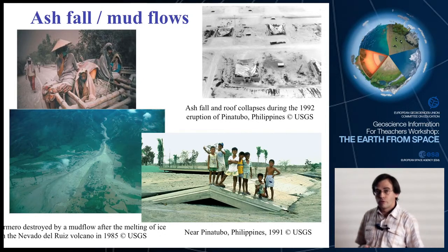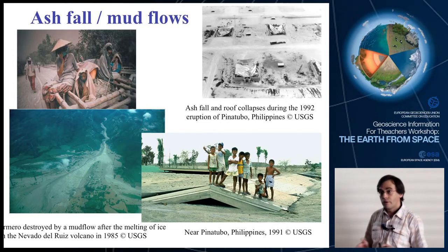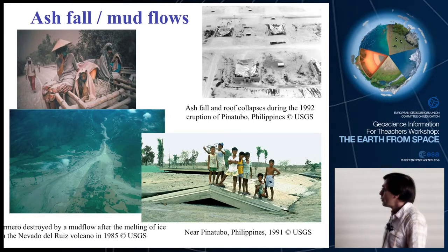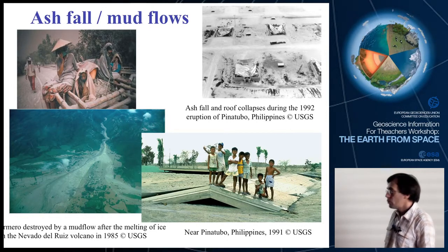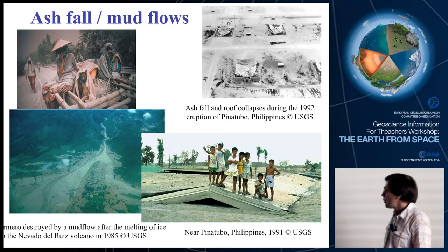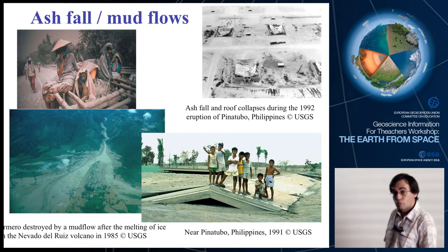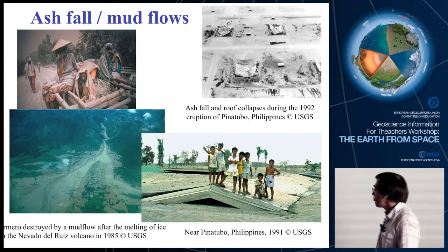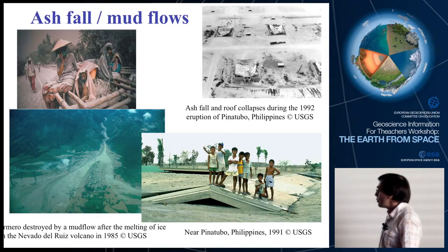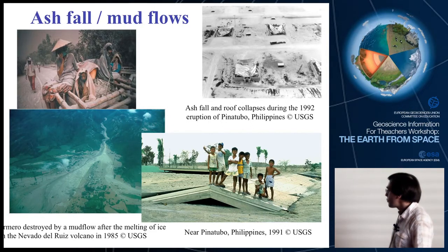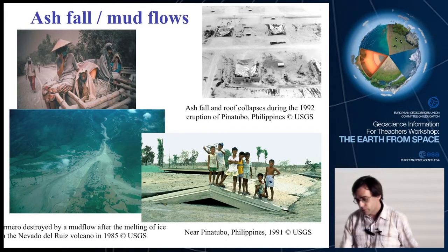Sometimes when you have a glacier on the volcano, the ice can melt and trigger a mud flow around the volcano. This occurred at Nevado del Ruiz in Colombia in 1985. There was a city called Armero and 20,000 people were killed by the mud flow produced by ice melting at the top of the volcano. When a mud flow occurs, the thickness of the flow can be several meters to several tens of meters — you just see the roofs of the houses.